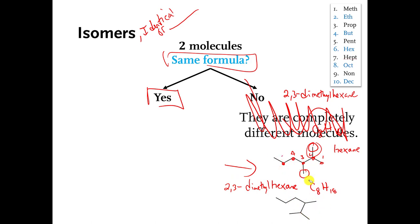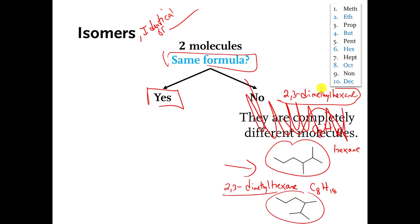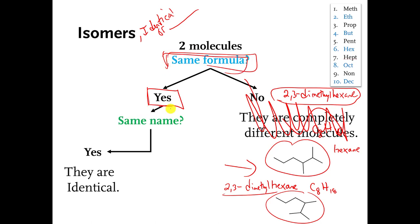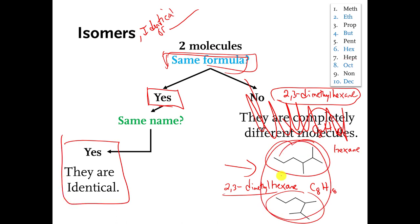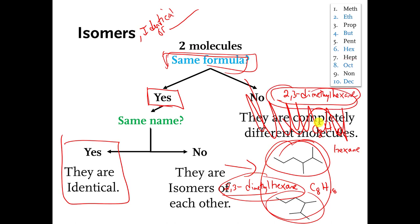Both molecules are called 2,3-dimethylhexane. They have the same formula and the same name, so these two molecules are identical to each other. If we had come up with different names, they would have been isomers — but in this case, same name means they are identical.